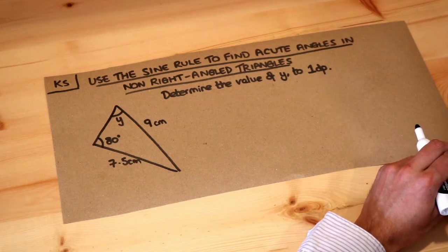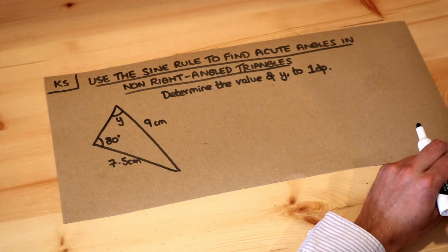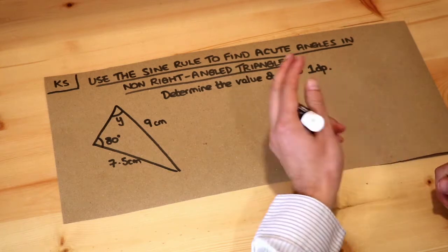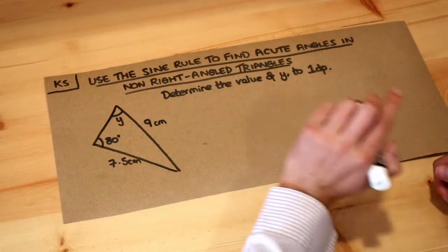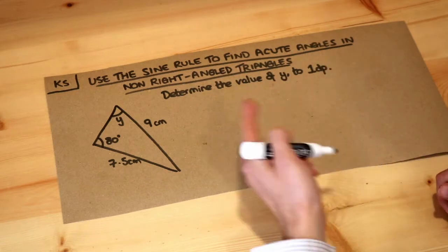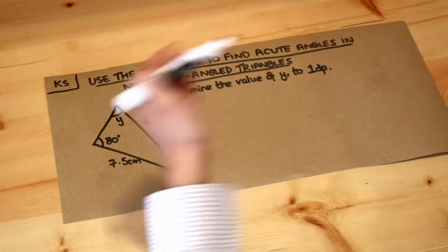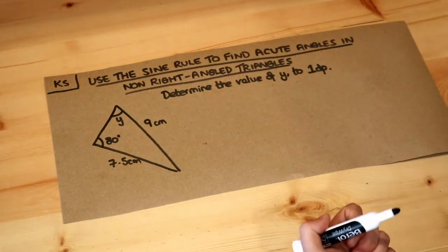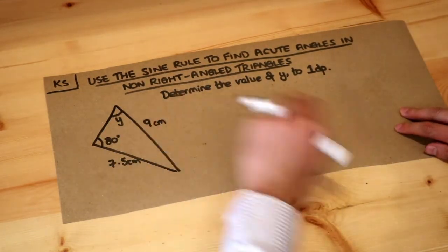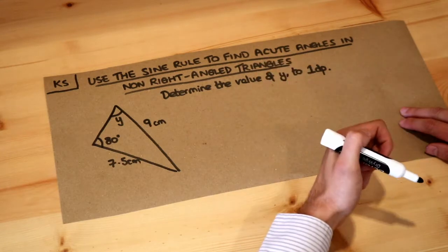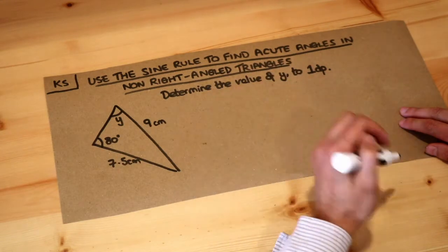In the previous video we looked at what the sine rule was, and the sine rule is a way we can work out unknown angles or sides when we don't have a right angle triangle. If you had a right angle triangle we can use traditional trigonometry like SOHCAHTOA, like sine of theta is opposite over hypotenuse, but if we have a non-right-angled triangle we have to use different formulas, for example the sine rule.